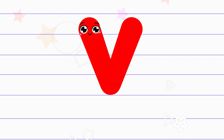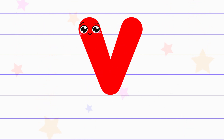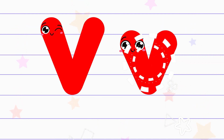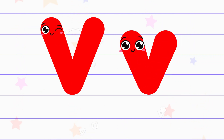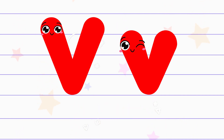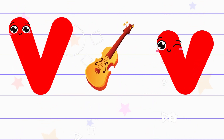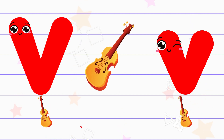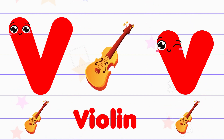V. The color of the letter V is red. The sound of the letter V is v. V is for violin.